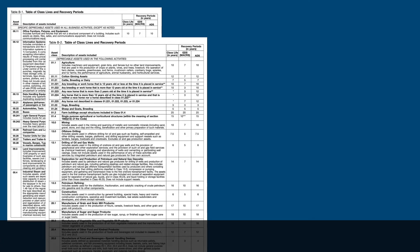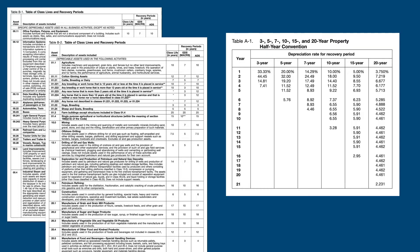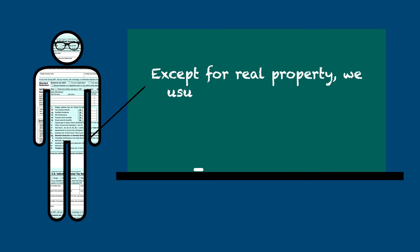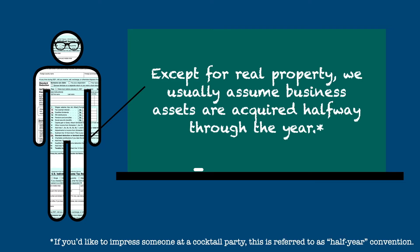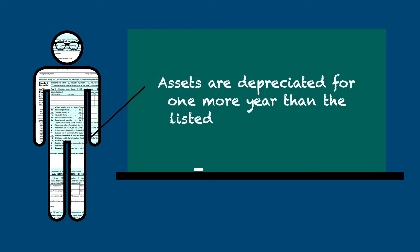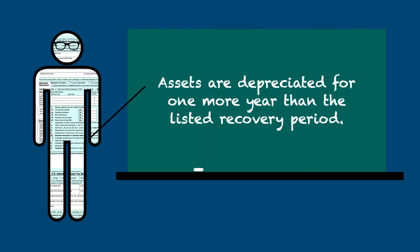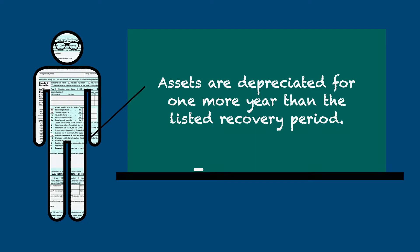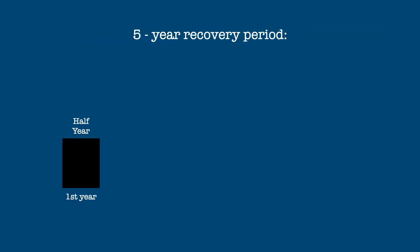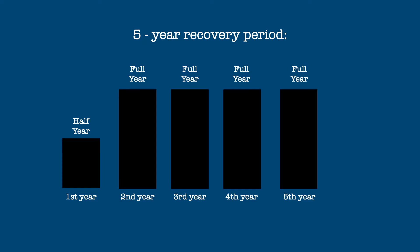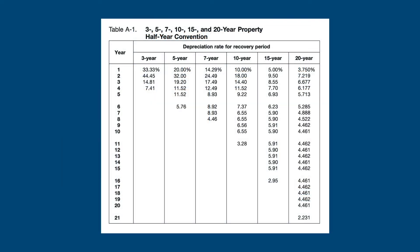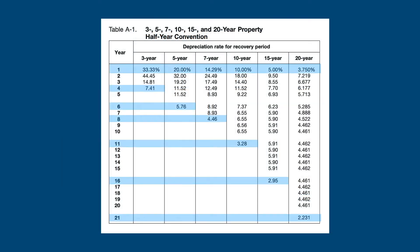Most of the time, for property that is not real property, Table A1 is used to find the annual depreciation percentage. Except for real property, we usually assume that business assets are acquired halfway through a given year. So that means we depreciate assets for one more year than the listed recovery period. For an asset with a recovery period of five years, we take one half year's depreciation in the first year, followed by four full years, and then finally one half year's depreciation to fully recover the cost. The A1 depreciation table takes these half years into account.